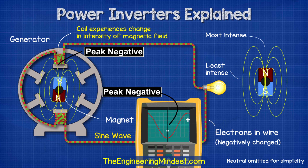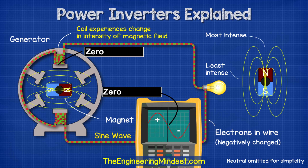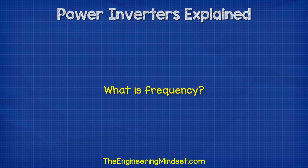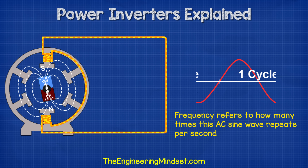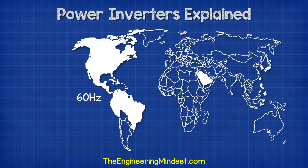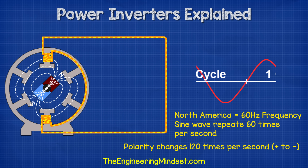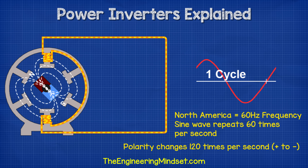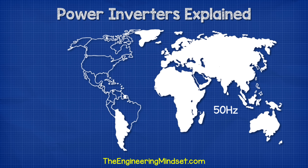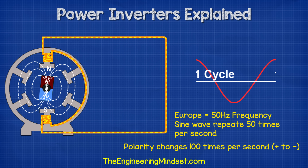The voltage is not constant in this type of electricity. Instead, it repeatedly moves from zero up to its peak, back to zero, then to the negative peak, and then finally back to zero again. Frequency refers to how many times this sine wave repeats per second. In North America and a few other parts of the world, we find 60 hertz electricity, which means the sine wave repeats 60 times per second, and as each wave has a positive and a negative half, its polarity reverses 120 times per second. In the rest of the world, we mostly find 50 hertz electricity, so the sine wave repeats 50 times per second and the current reverses 100 times per second.